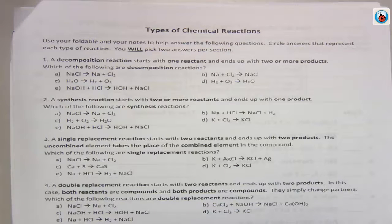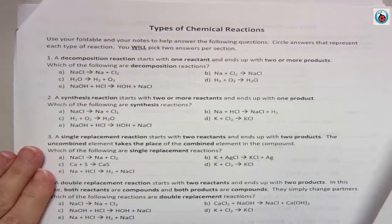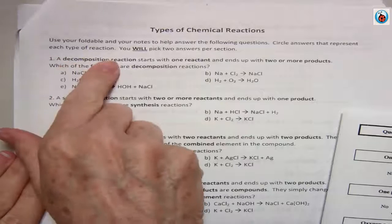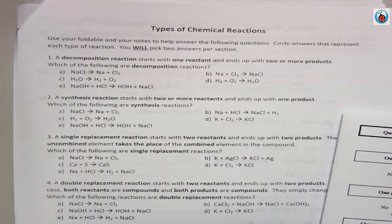Okay, so now we're going to use this foldable or our cheat sheet to answer these questions. You're going to circle the answers that represent each type of reaction and notice you will pick two answers per section. So you should have two answers for each one.